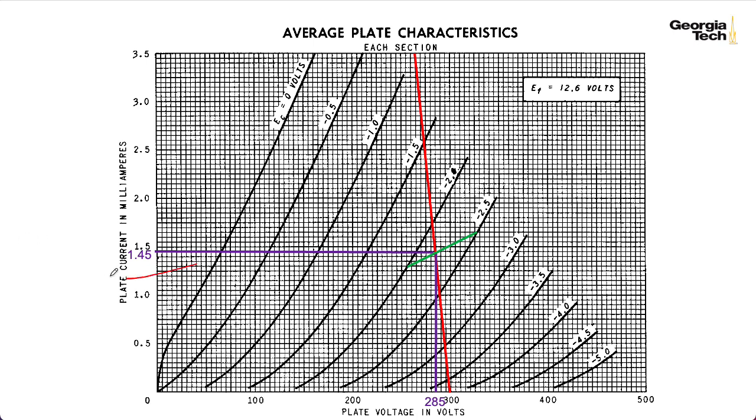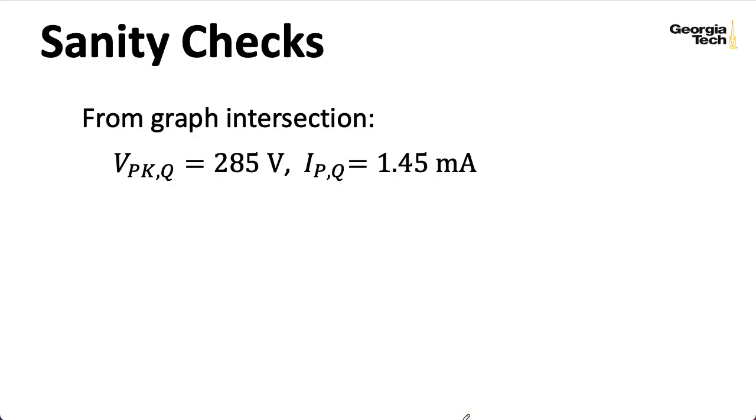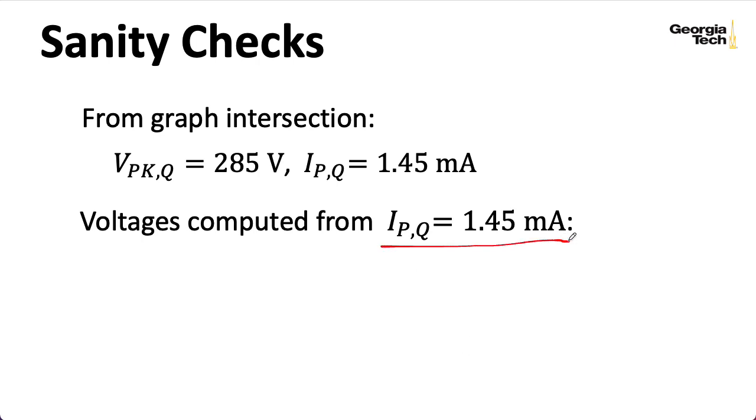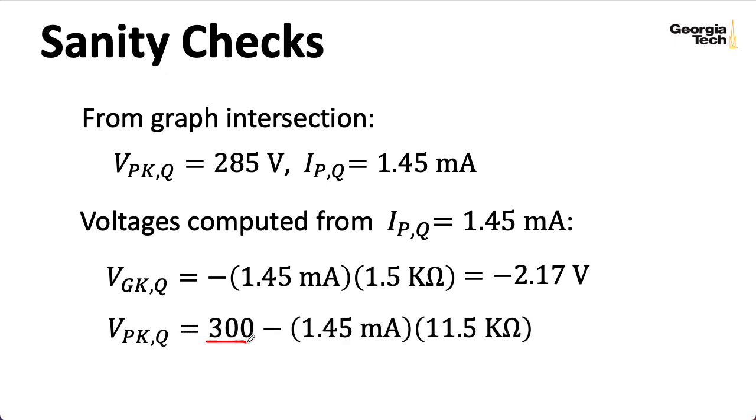So we can use this 1.45 milliamp value and this 285 volt value to do a bit of sanity checking. So that's where our lines intersected on the graph. And if I think about the voltages computed with what we read off the vertical axis there, well if I take that 1.45 and multiply it by 1.5, stick a minus sign in front to be pedantic, I wind up with minus 2.17 volts for my grid to cathode voltage. That's the drop across that resistance, and that matches more or less what we saw on the graph. Also if I take 300 volts and subtract that current that we measured times our RK prime, I wind up with 283 volts, which is more or less what we measured off the graph by looking at the horizontal axis. So everything squares.